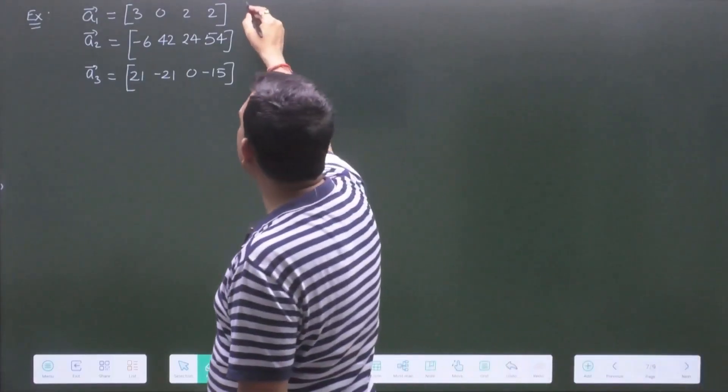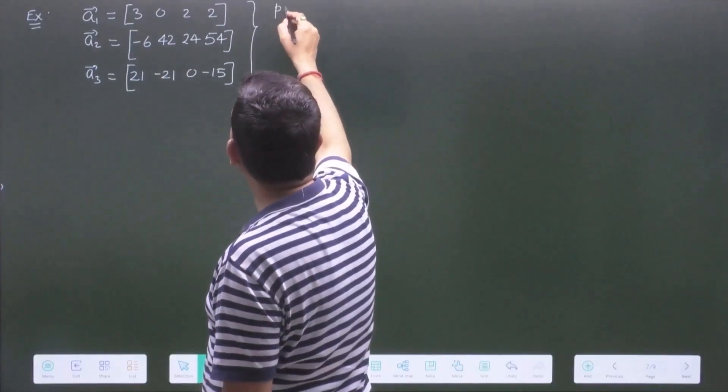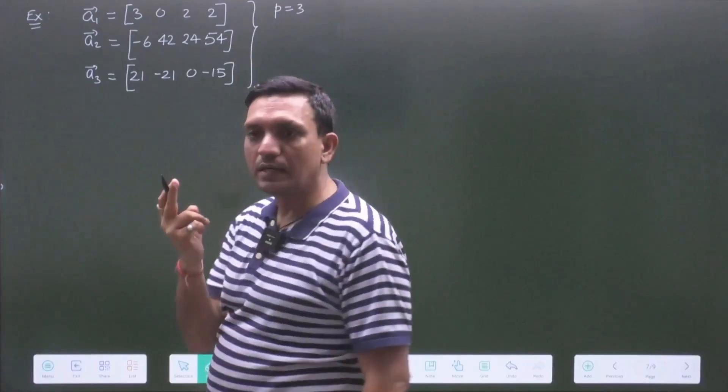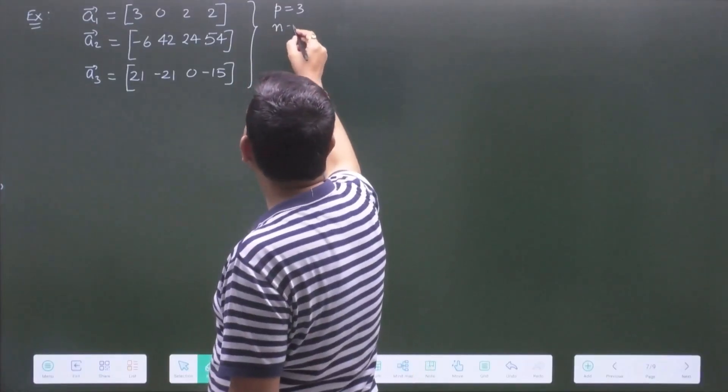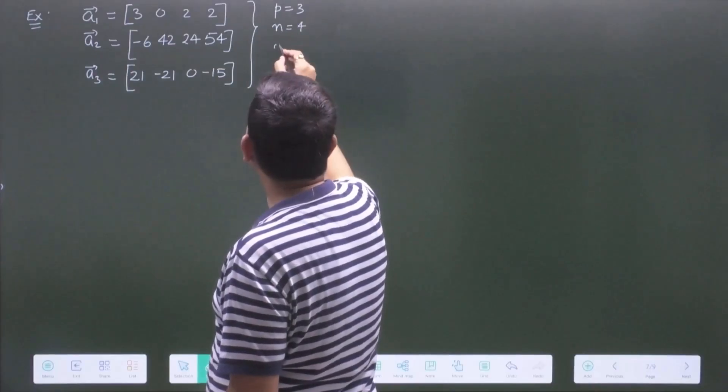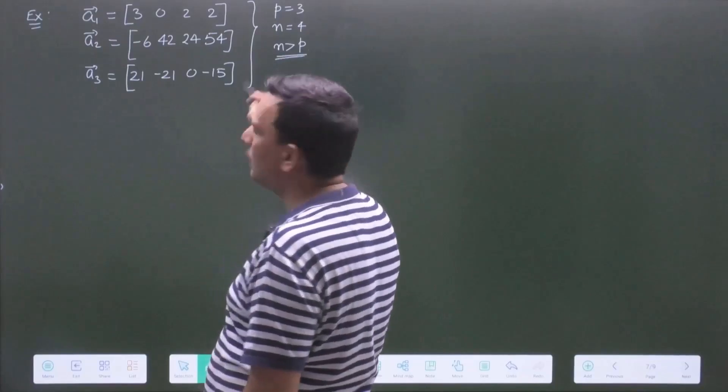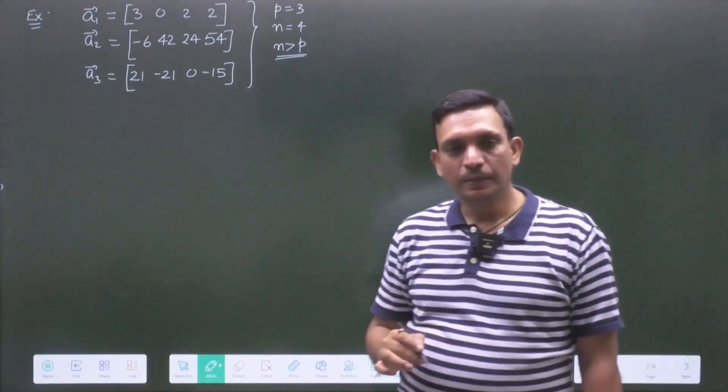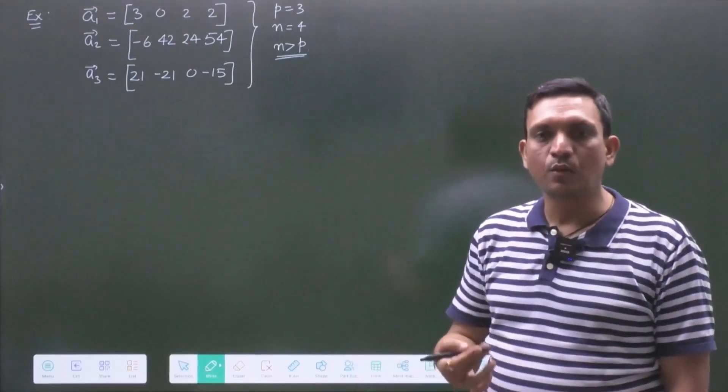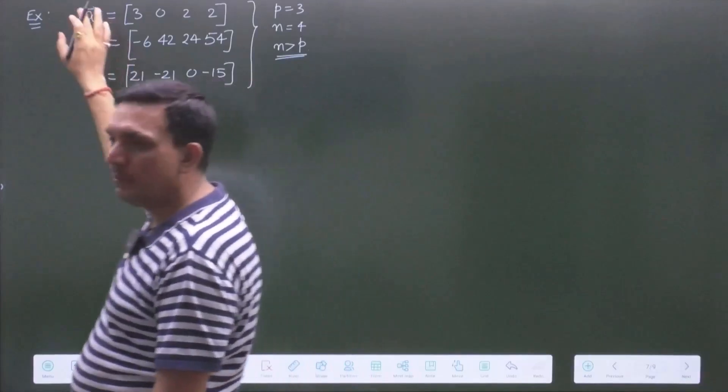So, let us first see how many vectors are there. Three. So, P is 3. Three vectors are given. How many components are there? N is equal to 4. So, that is the case of N greater than P. So, theorem 1 is applied. You have to check whether rank of the matrix is equal to P or less than P. So, you have to form the matrix.